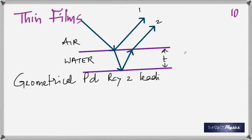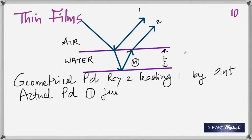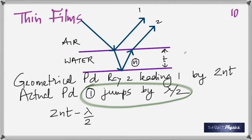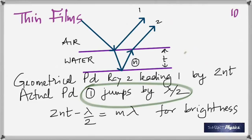A student asks about non-reflective coatings on lenses. If a coating is non-reflective, you want to cancel the reflected rays — so you're looking for the condition for darkness, not brightness. This is logic plus math; always read the problem carefully to determine what condition you're applying.